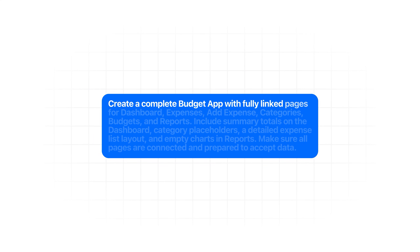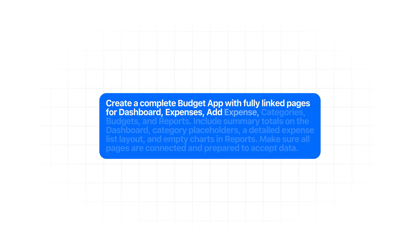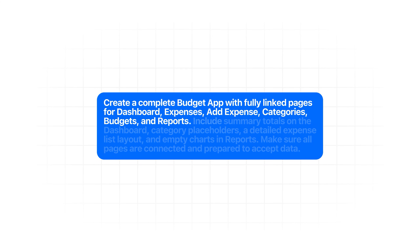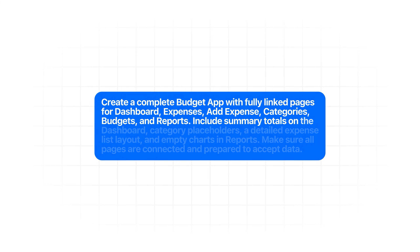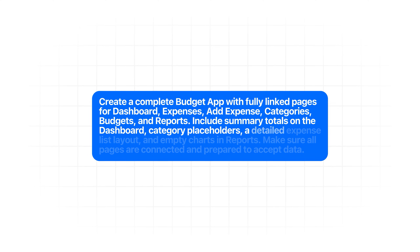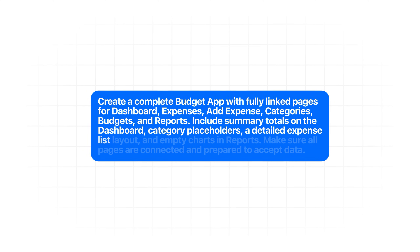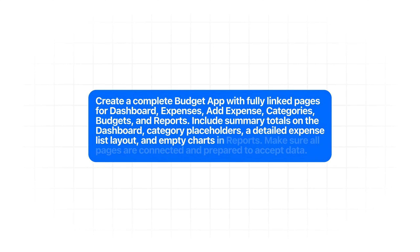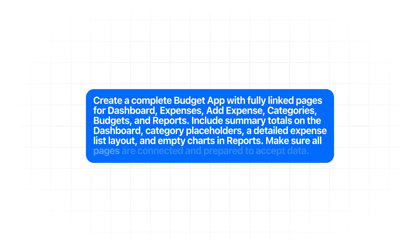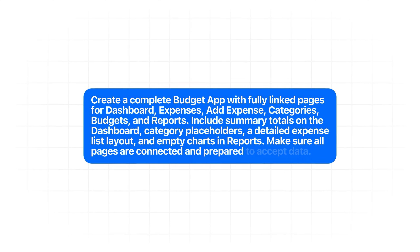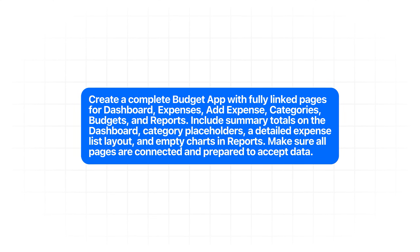To do that, I'll start by telling Base44 to generate the entire foundation of the budget app in one go: create a complete budget app with fully linked pages for dashboard, expenses, add expense, categories, budgets, and reports. Include summary totals on the dashboard, category placeholders, a detailed expense list layout, and empty charts in reports. Make sure all pages are connected and prepared to accept data.